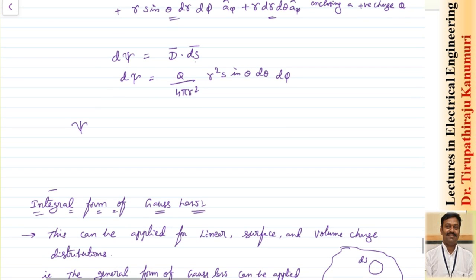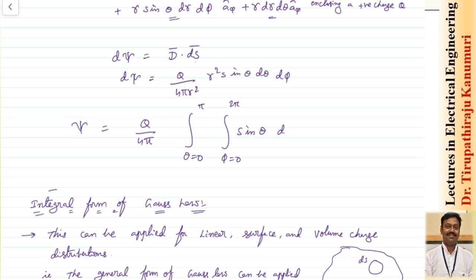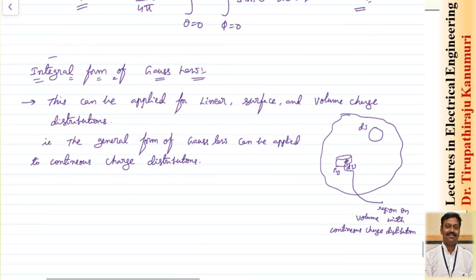To calculate the total flux coming out of the surface, we take the closed surface integral. This becomes Q divided by 4π, integrated with θ varying from 0 to π and φ from 0 to 2π, giving the integral of sinθ dθ dφ. Evaluating this integral gives exactly Q — the charge enclosed. So Gauss's law is proved: the total flux leaving the surface equals the charge enclosed. This is called the integral form of Gauss's law.